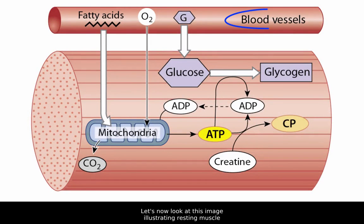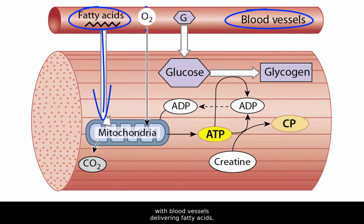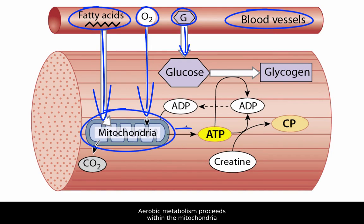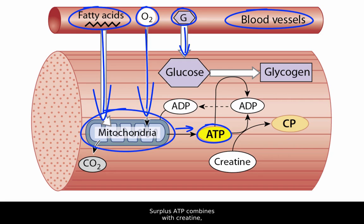Let's now look at this image illustrating resting muscle with blood vessels delivering fatty acids, oxygen, and glucose. At rest, oxygen is plentiful. Aerobic metabolism proceeds within the mitochondria, and abundant ATP is produced.